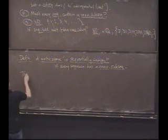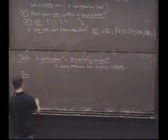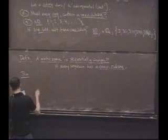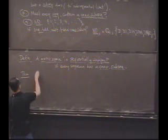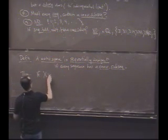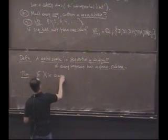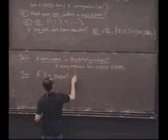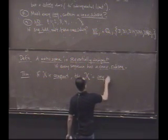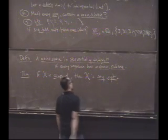So here's a theorem. Compactness basically implies sequential compactness. So if X is compact, then X is sequentially compact. There's the theorem.